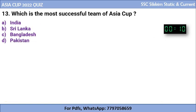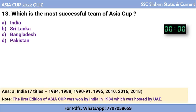Question 13: Which is the most successful team in Asia Cup history? Is it India, Sri Lanka, Bangladesh, or Pakistan? The correct answer is India, which has won seven titles from 1984 through 2018. Notably, the first edition of Asia Cup was held in 1984, won by India, and that first edition was also hosted by the United Arab Emirates — which is also the host of this year's Asia Cup.